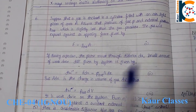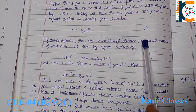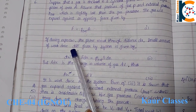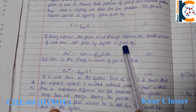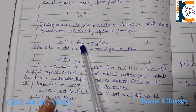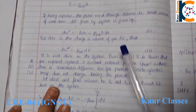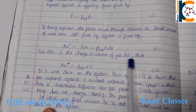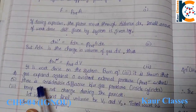During expansion, the piston moves through a small distance dx. The small amount of work done by the system is dW, which equals force into distance. Substituting force from equation number one gives dW = P_ext × A × dx — this is equation number two. Since A × dx equals dV, we can replace A·dx by dV.